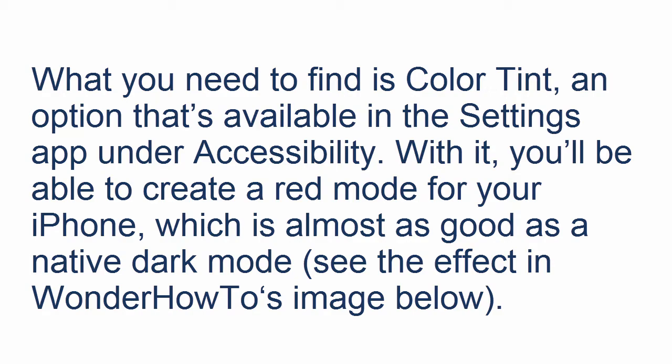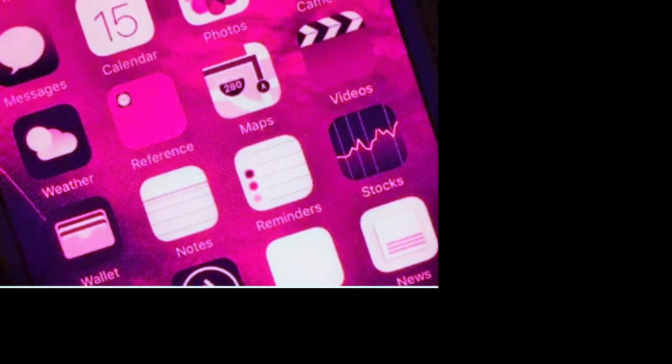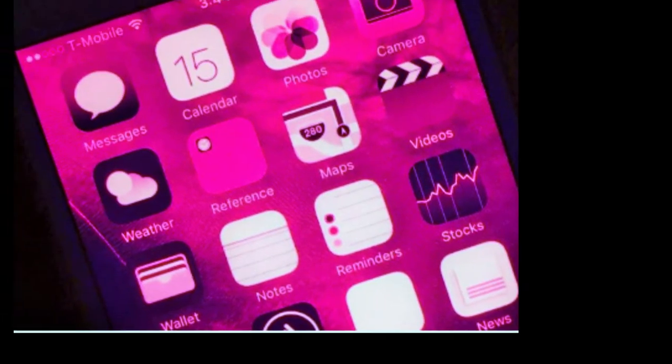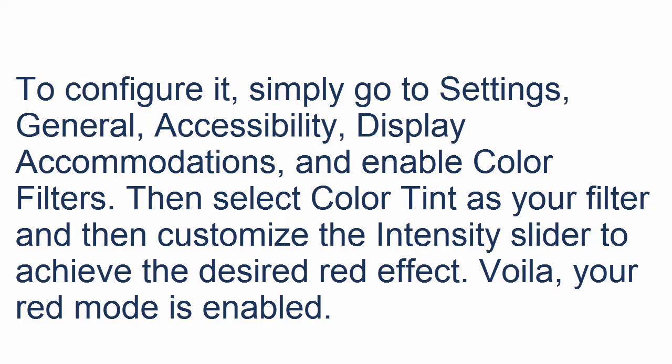To configure it, simply go to Settings → General → Accessibility → Display Accommodations and enable Color Filters. Then select Color Tint as your filter, and customize the intensity slider to achieve the desired red effect.